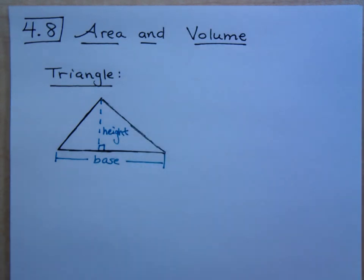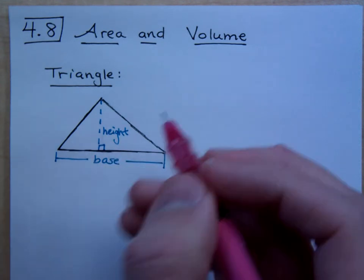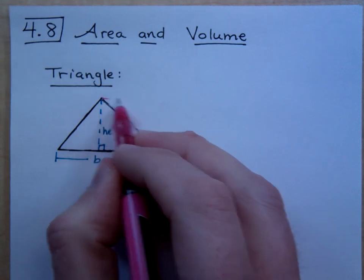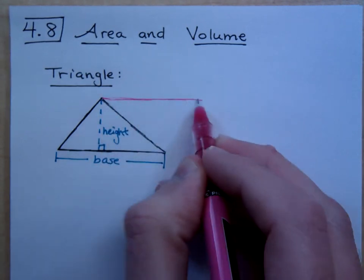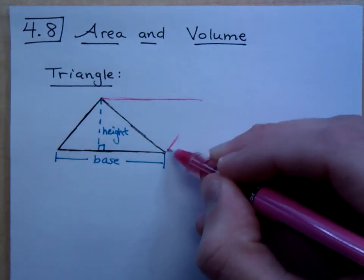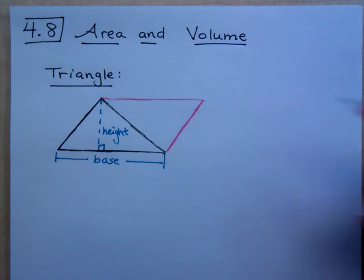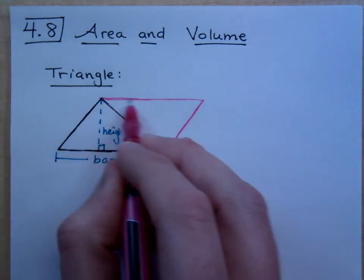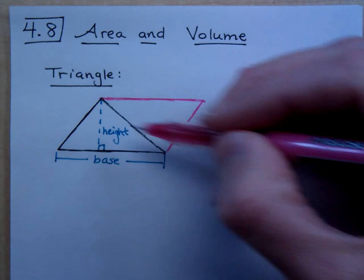How do we find the area of this? Well, if we kind of create an extension of this, if we create a double image of this guy, like this, where it has the same base and the same height as this guy. What have I created? What is the shape that you see here?